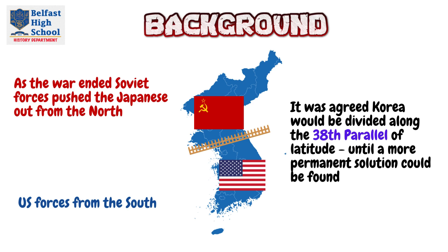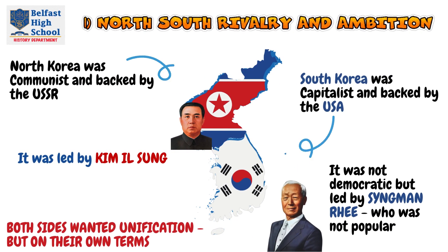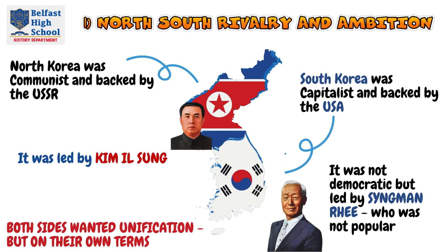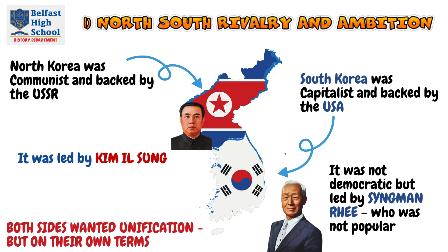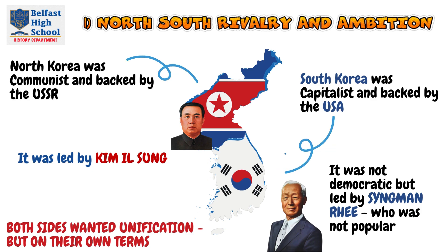The first real cause is this North-South rivalry and ambition. In the North, you had a communist state backed by the USSR and led by a man called Kim Il-sung. In the South, you had South Korea being capitalist — not democratic, but capitalist — and of course backed by the United States of America. It was led by Syngman Rhee, who was quite a corrupt politician and not particularly popular in the South.